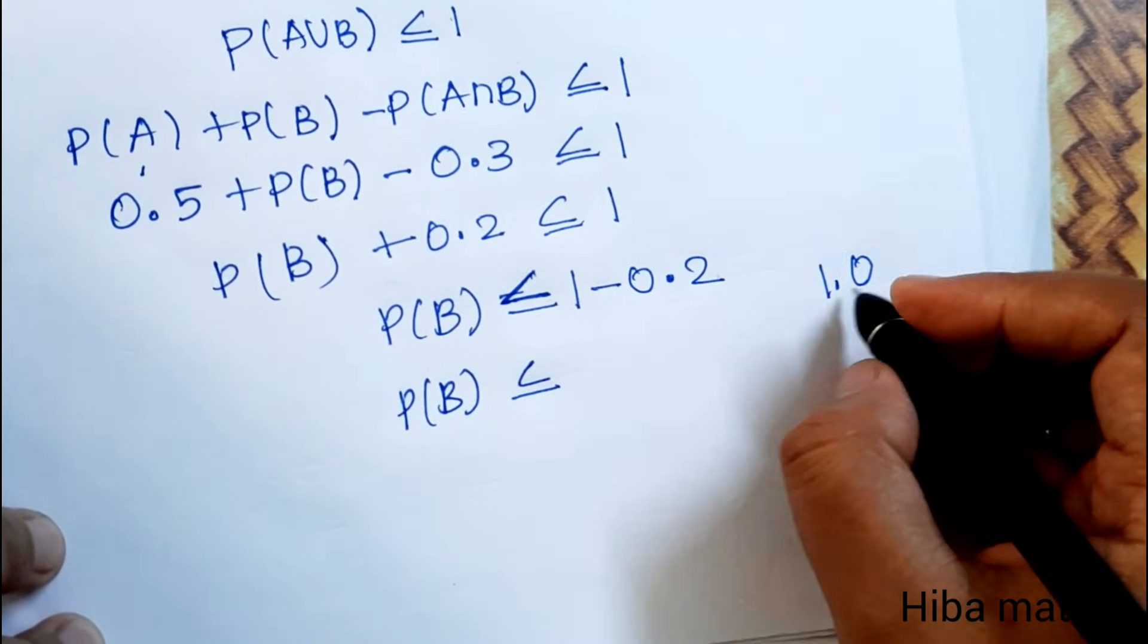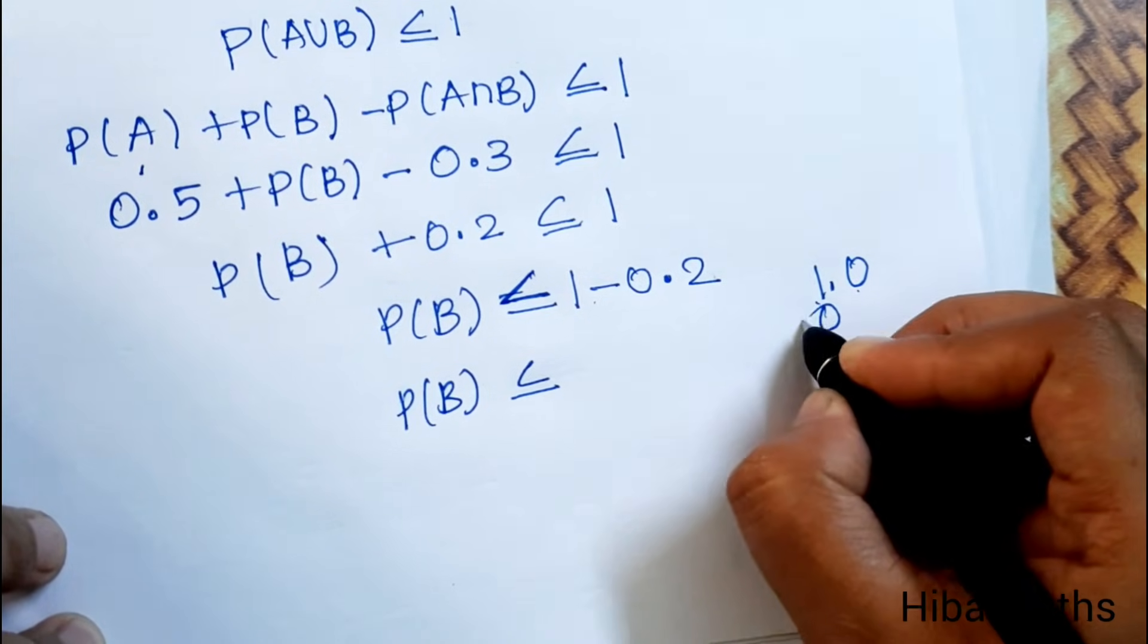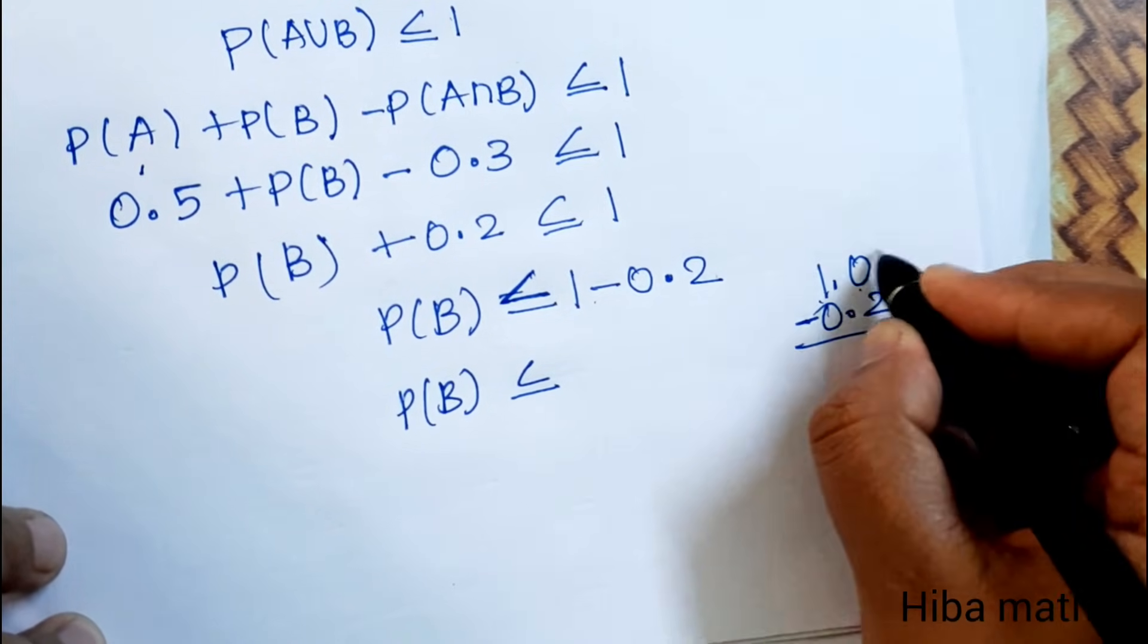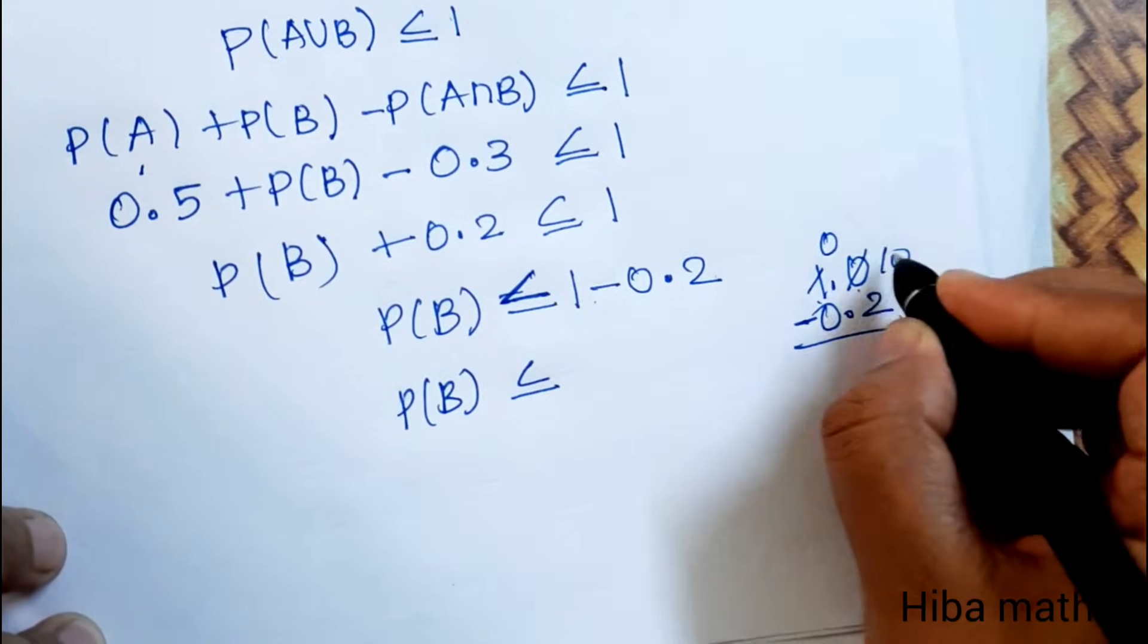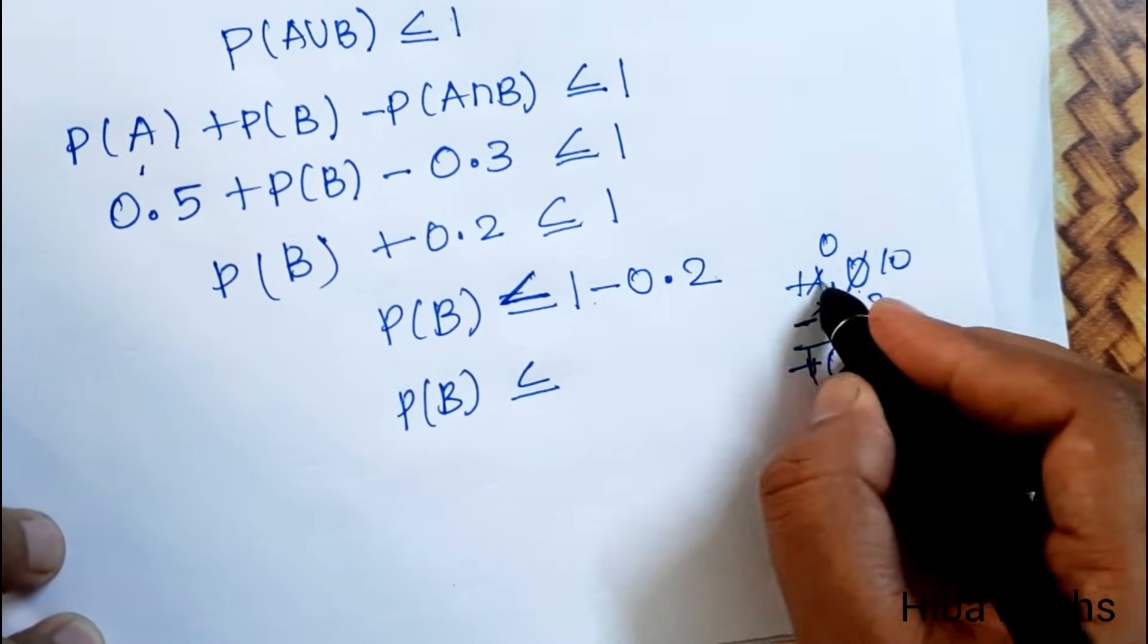We'll do 1.0 minus 0.2. This is 10 minus 2 is 8, so 0.8. So the answer is 0.8.